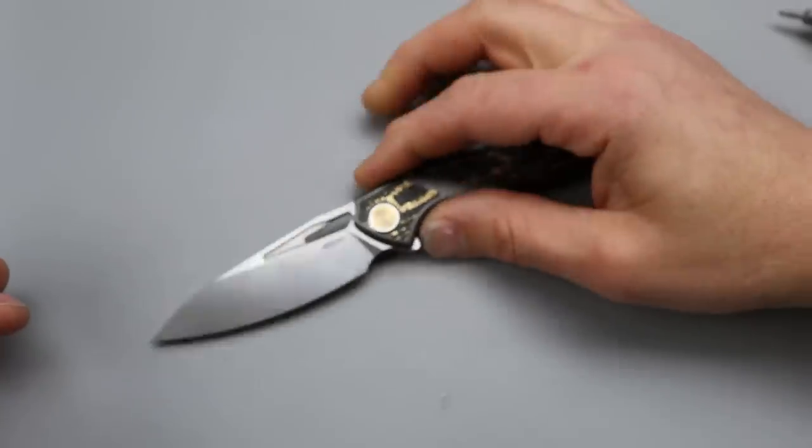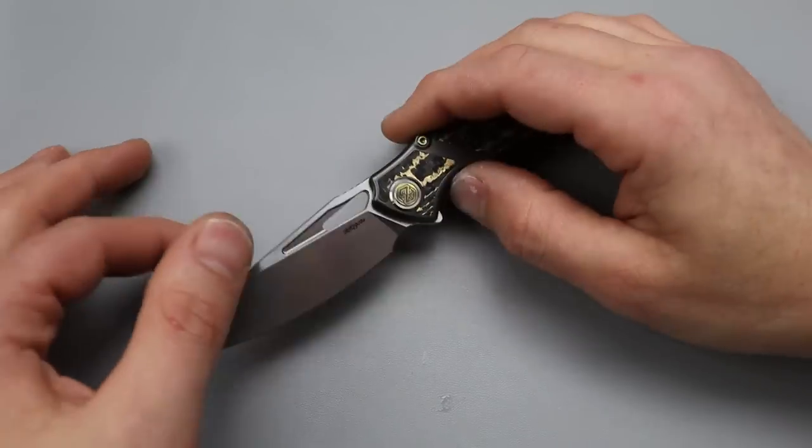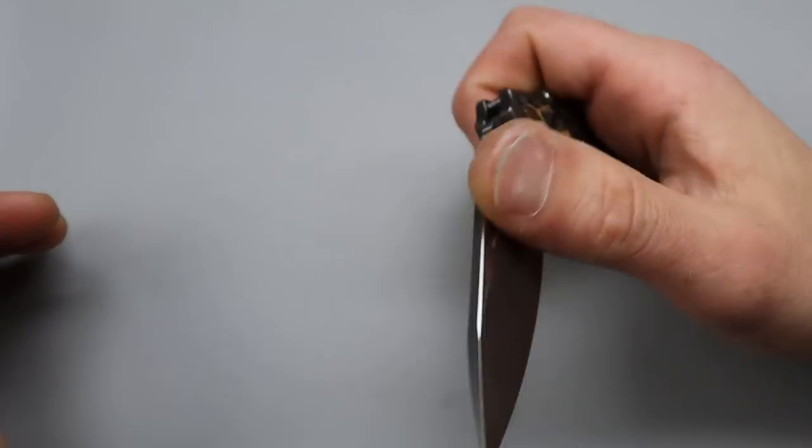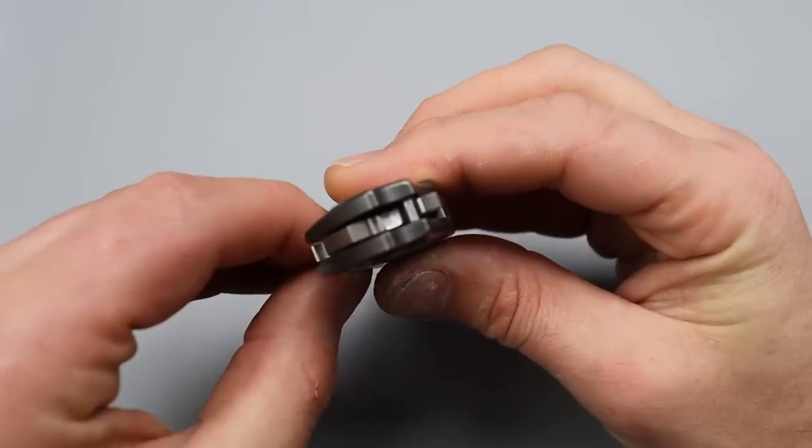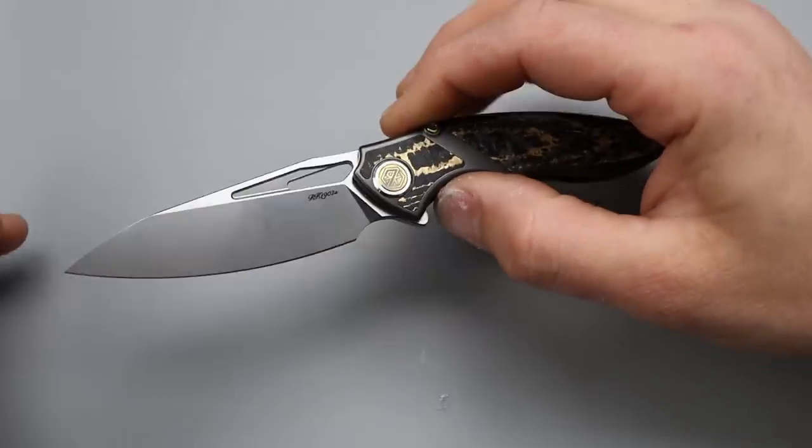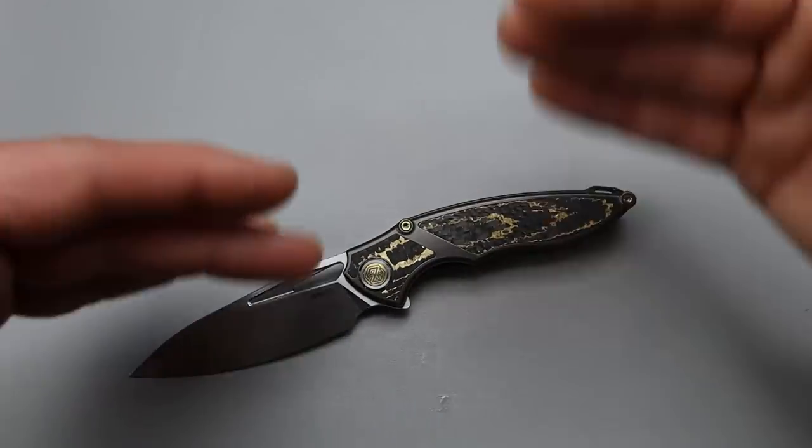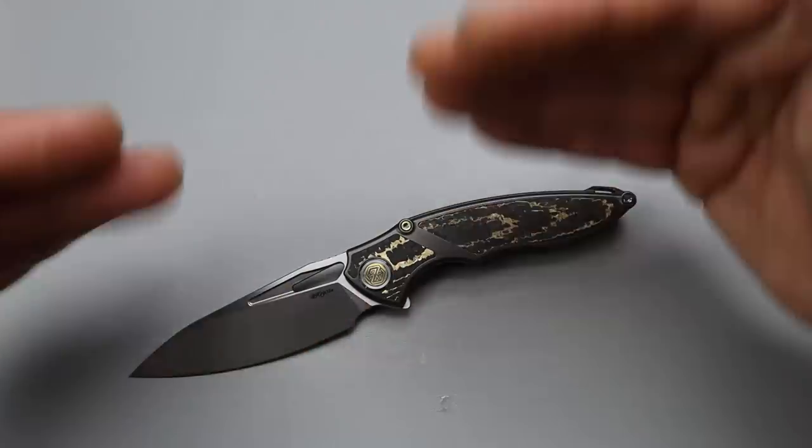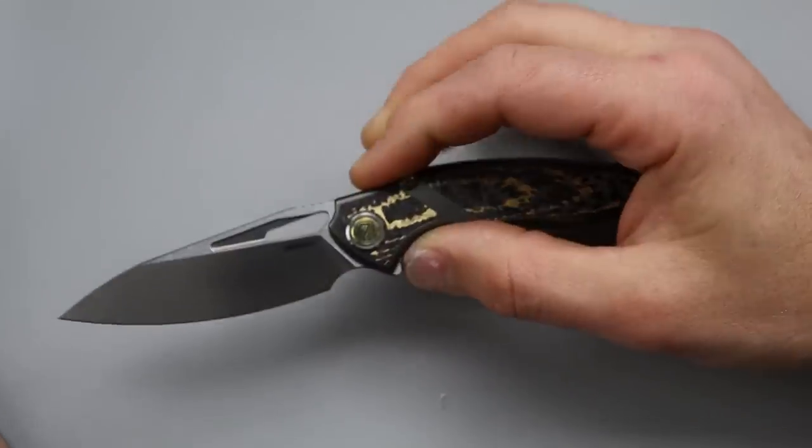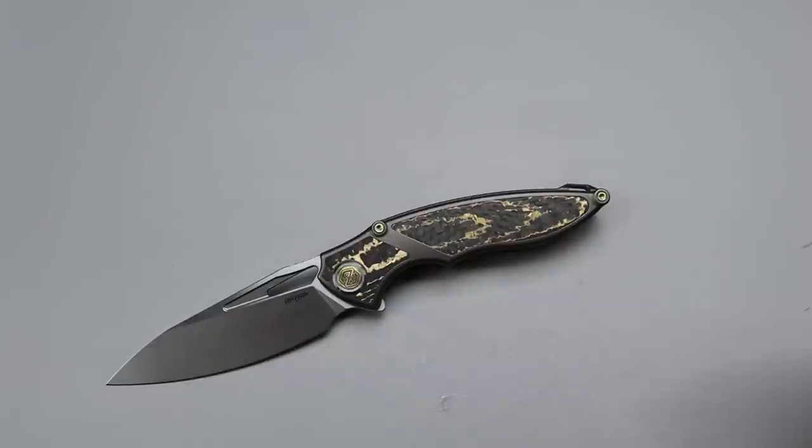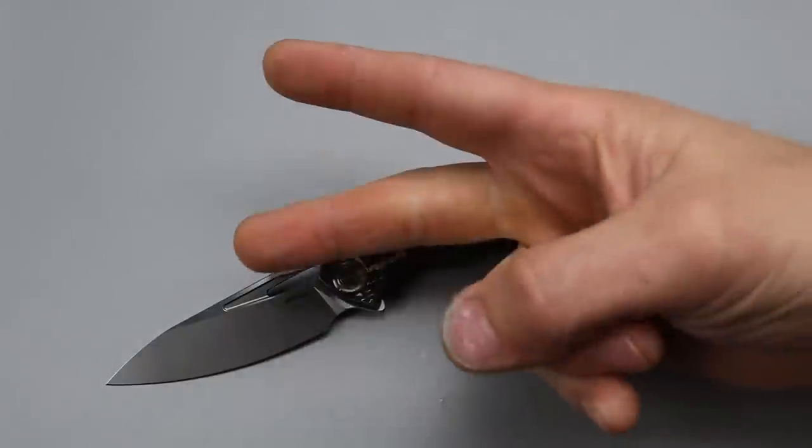But yeah, there you guys go. Just a quick look at the new Rike 1902. Like I said, I will link everything down in the description for you guys if you want to check this out. And I'll link just Rike from Blade HQ so you guys can see other models that are on their site. We are an affiliate, so it does help the channel if you guys do use any of our links down in the description. I love you guys. Thank you guys for watching. Peace.